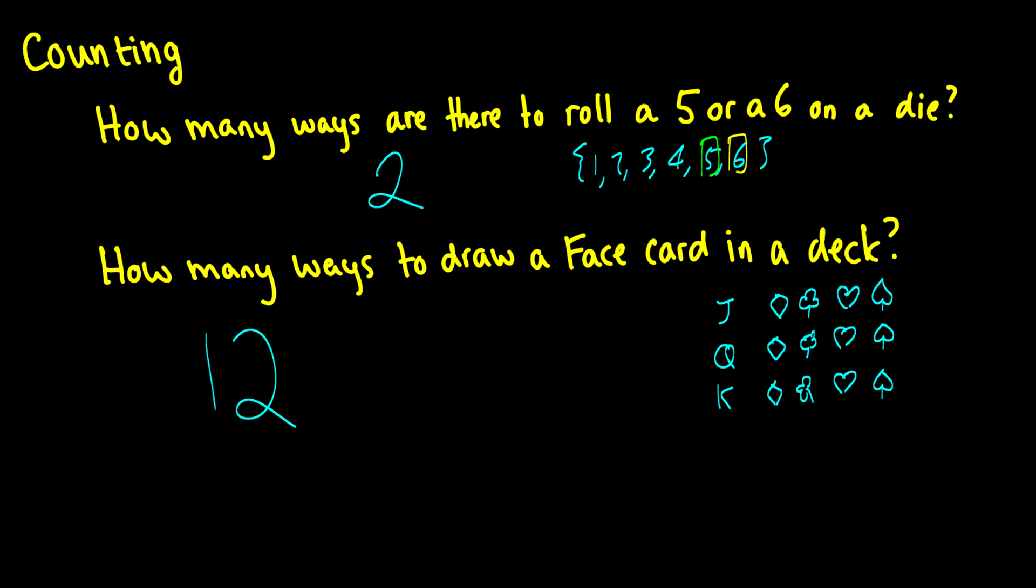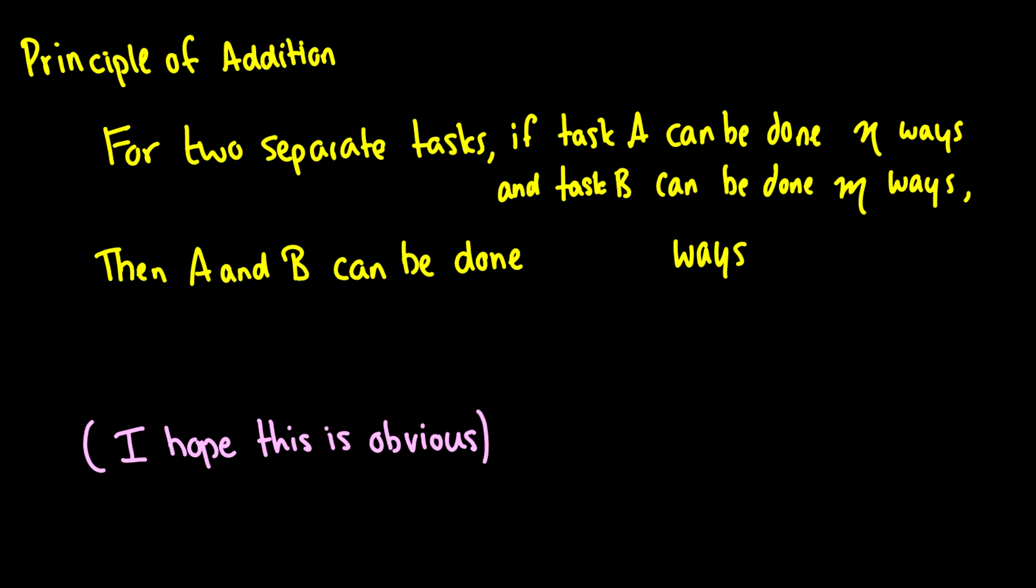Of course, if you drew a second card, you would have less ways because you just took one out. But what we have there is an example of the principle of addition. So what we say is if we have two separate tasks, A and B, and A can be done in N ways, and B can be done in M ways, of course these are variable numbers, then both of them together can be done in N plus M ways. I really hope this is obvious.